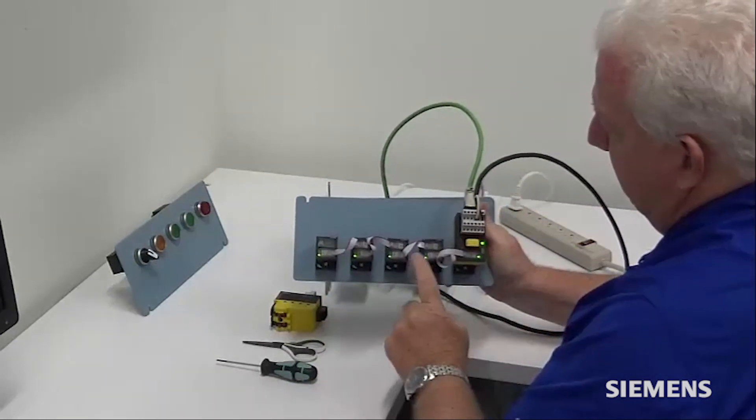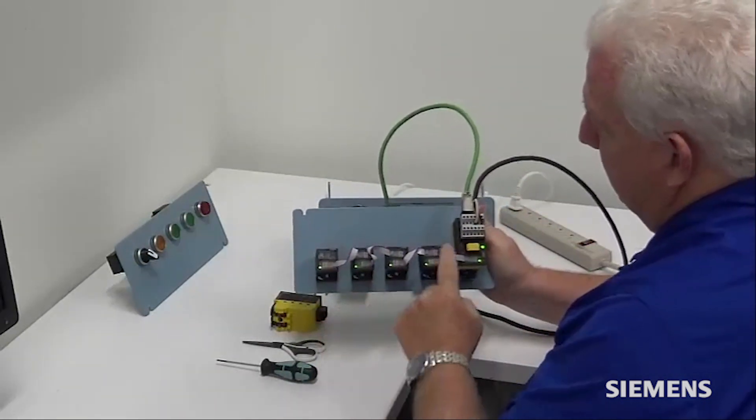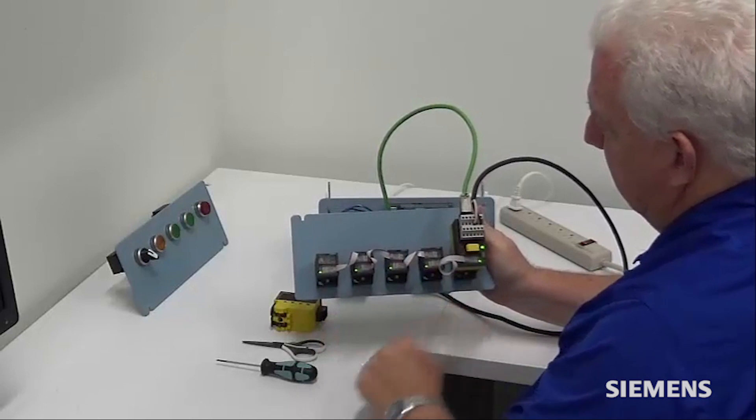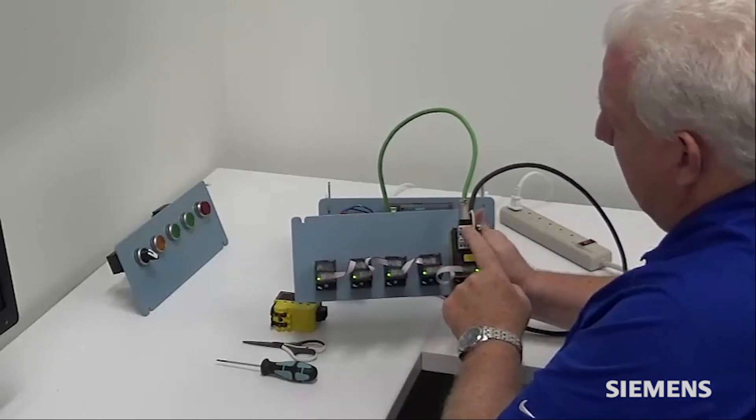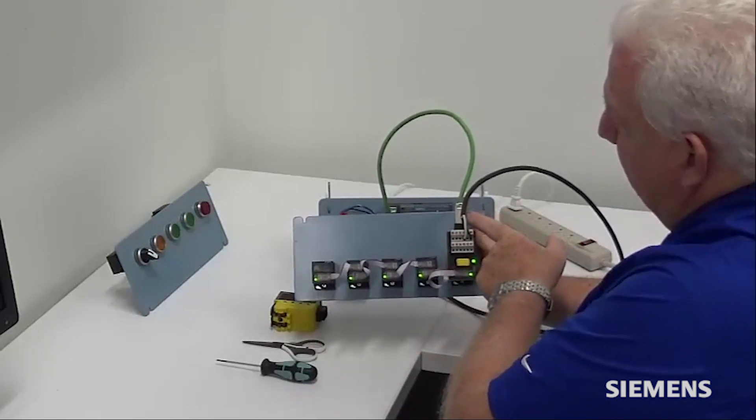Here's your interface module, here's your terminal modules and they're connected up via a ribbon cable system. You have a 24 volt power connection and then your Profinet connection.